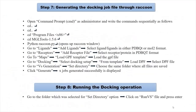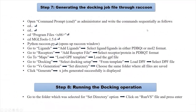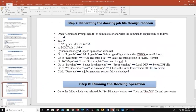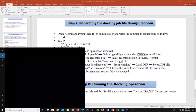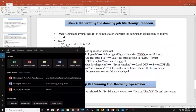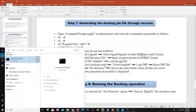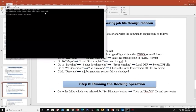The next step is writing the docking job file through Raccoon. Raccoon is another software that comes embedded with AutoDock. To open Raccoon, we go to the command prompt and navigate to the folder where AutoDock is installed.